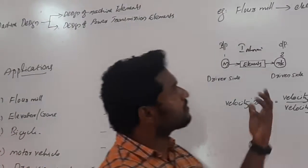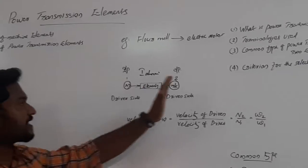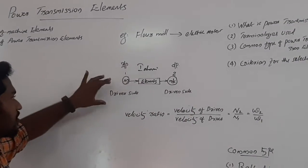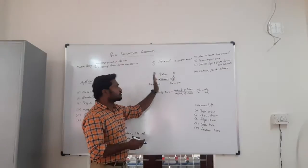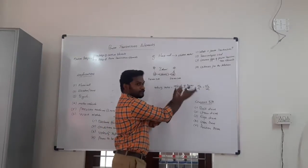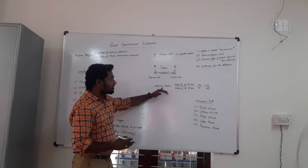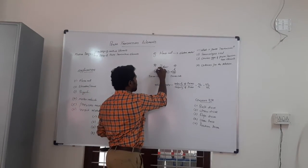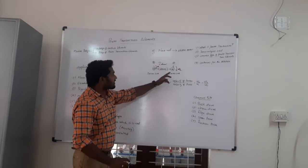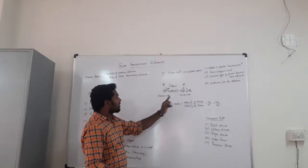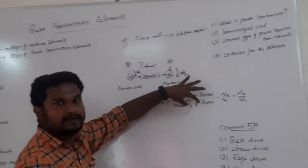Before going into detailed study, you have to understand some terminologies. The input side is called the driver side and the output side is called the driven side. The side from which power is to be transmitted is the driver side, and the side to which power is to be transmitted is the driven side. One more terminology is velocity ratio — it is the ratio of the angular velocity of the driven side (omega 2) to the angular velocity of the driver side (omega 1).